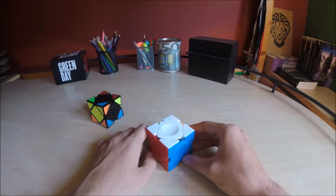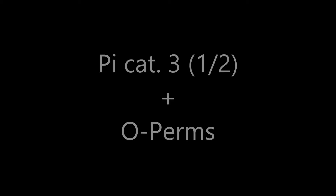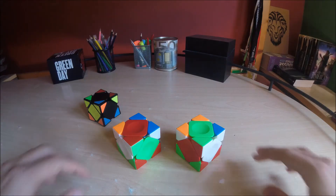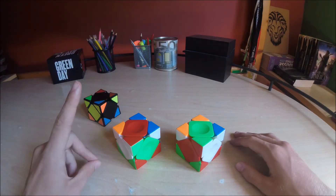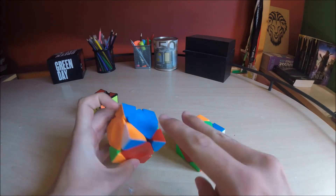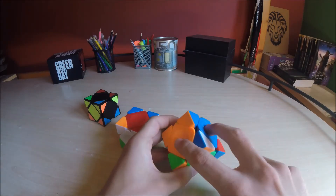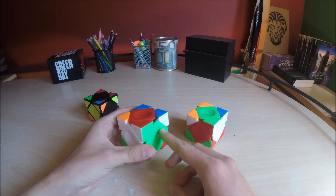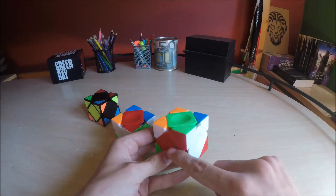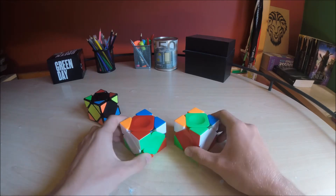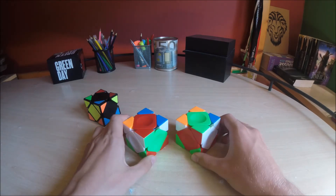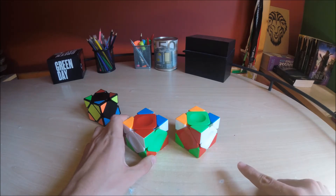Let's do the next cases. In the next two cases we now have the variation of the U-perms. There are two blocks and three centers that gives in this situation a U-perm. And the difference between these two is that this one the adjacent centers are on the left side, and the other one is on the right side.